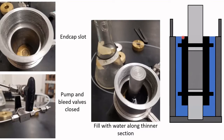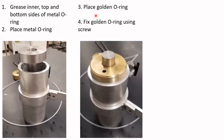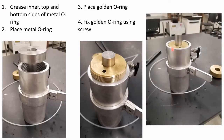Once that is done, we close the vessel. First, we take the metal O-ring and apply vacuum grease on the inner side, top and bottom. Then we place the metal O-ring followed by the golden O-ring. We use the screws at the back to fix the golden O-ring. The result is a closed vessel with both valves closed.